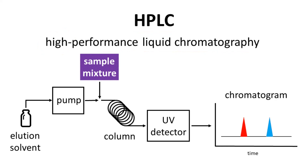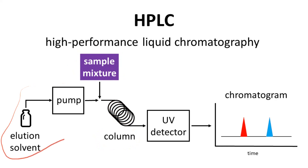In HPLC, people often analyze a mixture of compounds. They take a mixture of compounds — or maybe a pure compound — and pass it through a tiny pipe, a column, with high solvent pressure to push everything through. Based on their different properties, each compound in the mixture will take a different amount of time to pass through the column, so the column separates the components in the mixture.